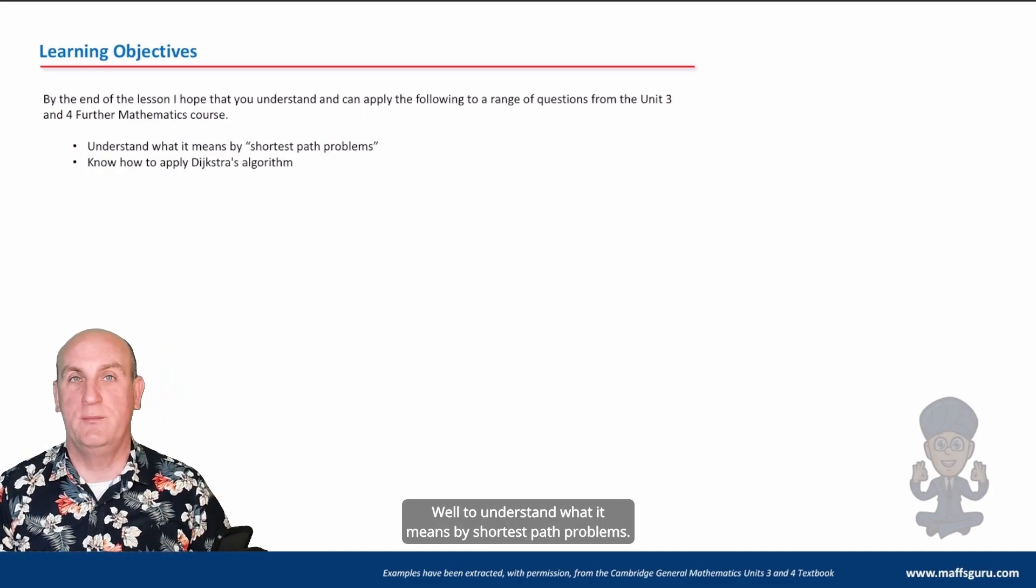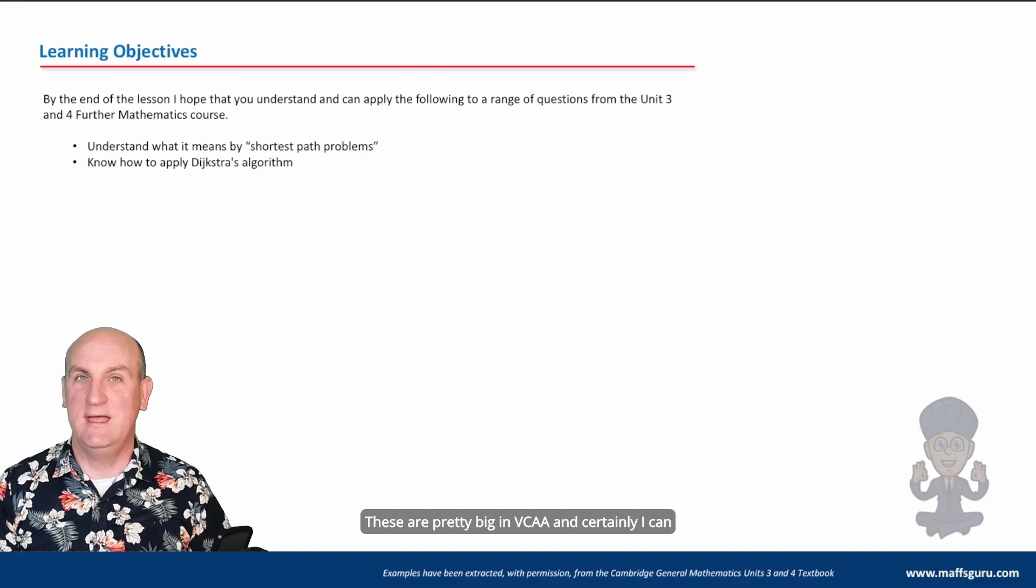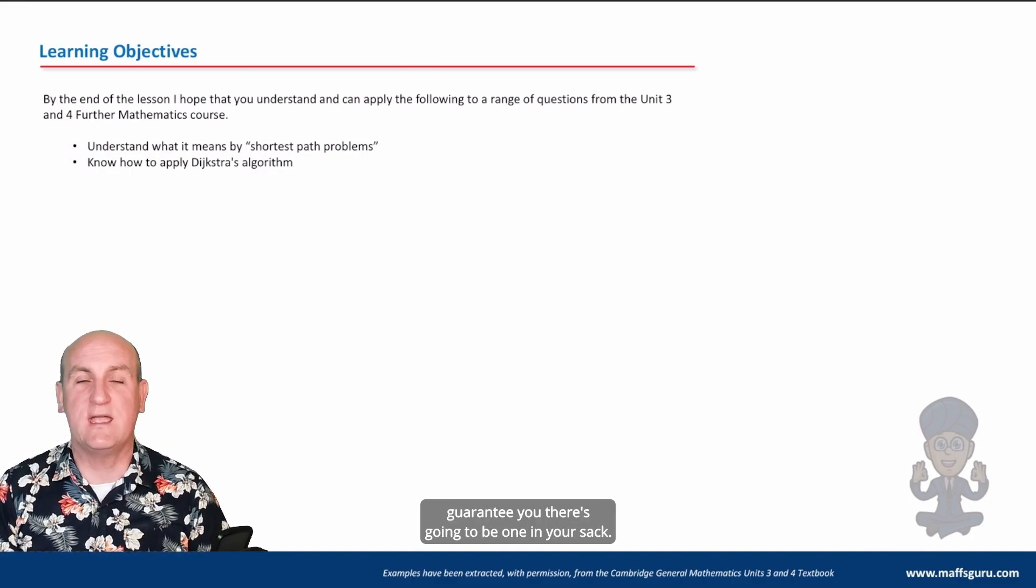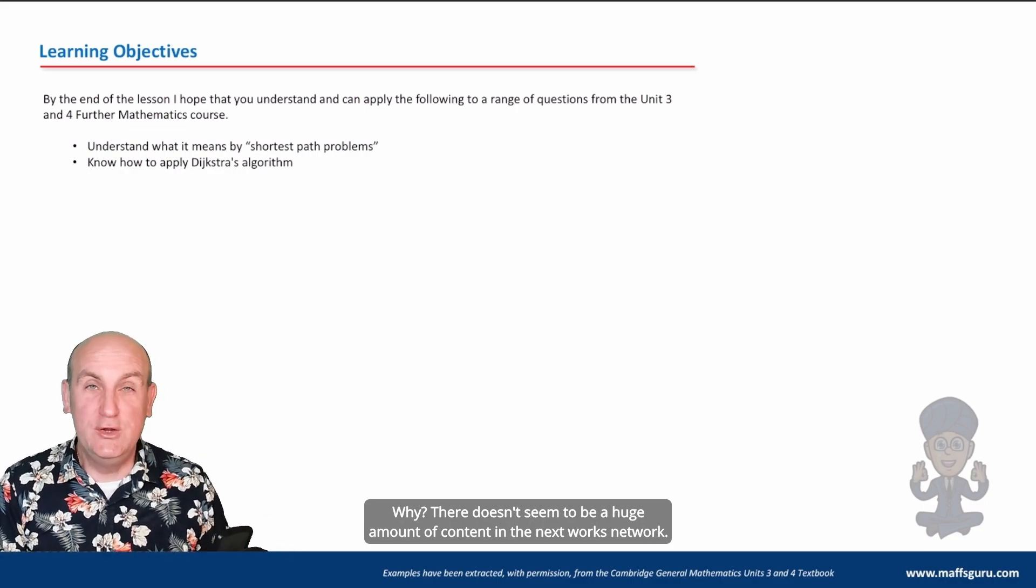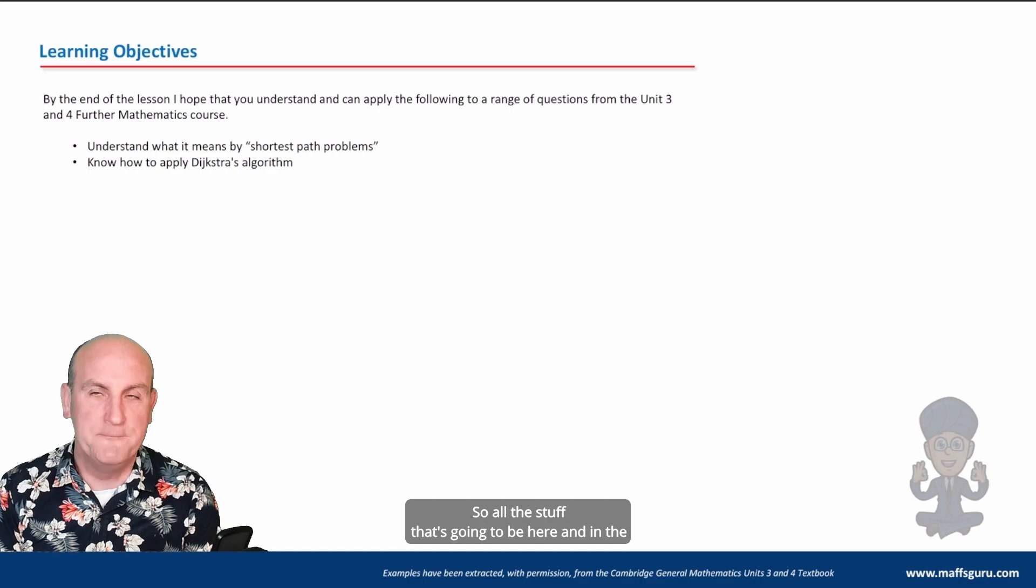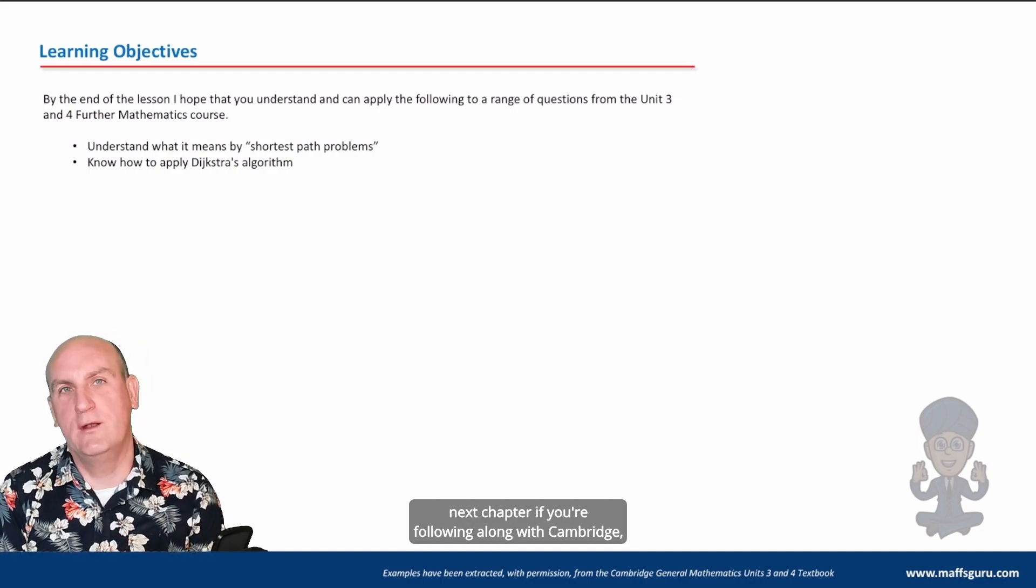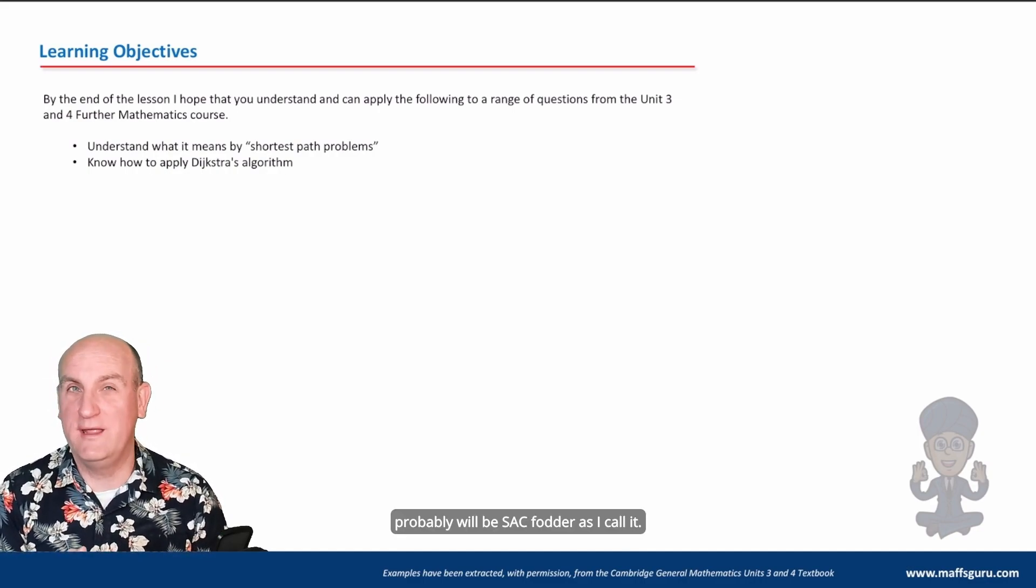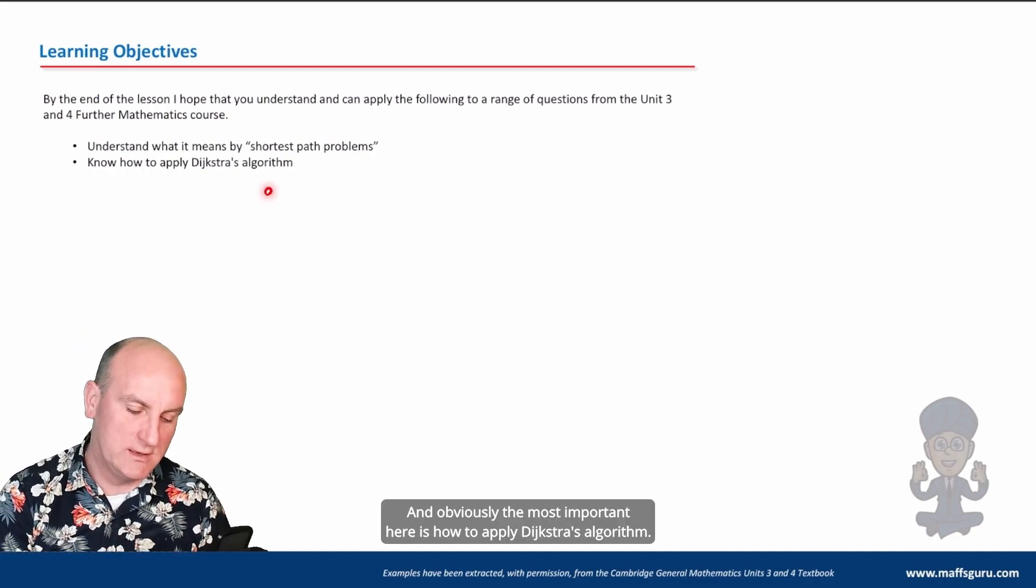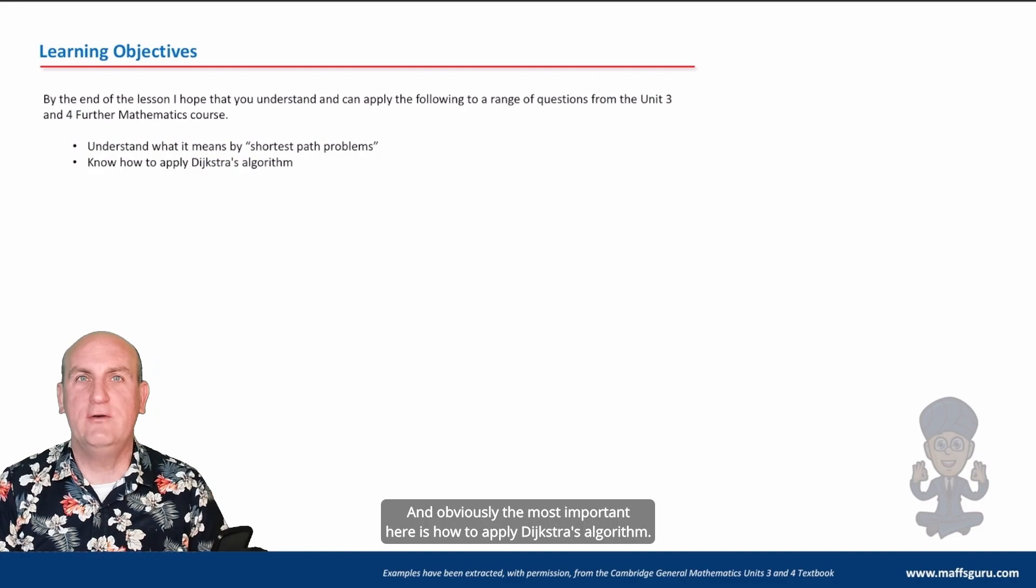Well, to understand what it means by shortest path problems. These are pretty big in VCAR and certainly I can guarantee you there's going to be one in your SAC. Why? There doesn't seem to be a huge amount of content in the networks chapter, so all the stuff that's going to be here and in the next chapter, if you're following along with Cambridge, probably will be SAC fodder as I call it. And obviously the most important here is how to apply Dijkstra's algorithm.